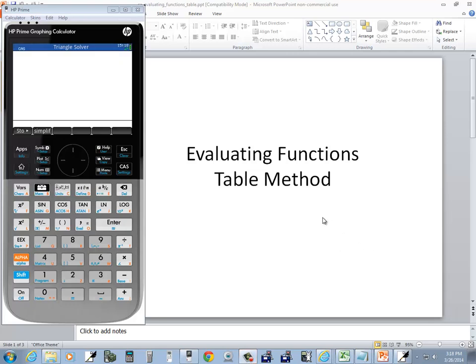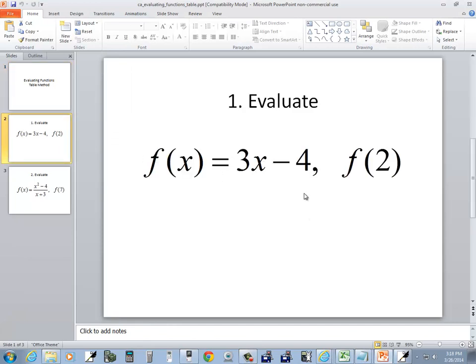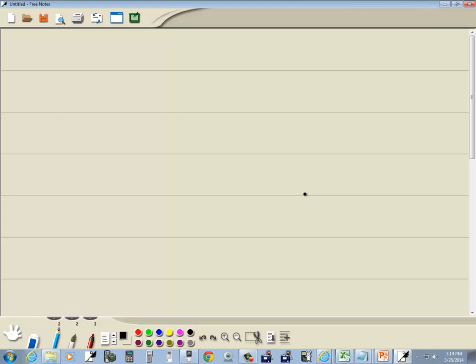Let's take a look at evaluating functions using the table method on HP Prime graphing calculator. Let's look at our first problem here. We got f of x is equal to 3x minus 4, and we want to find f of 2.